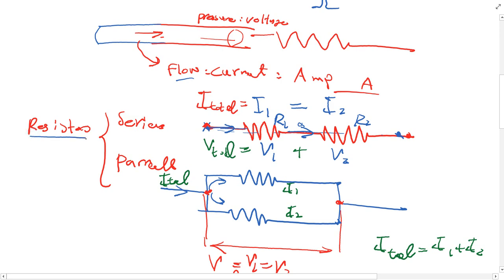Let's consider two scenarios: one where resistors are in series, and the other where resistors are in parallel. Series means when two resistors come after each other — if electricity wants to go, it has to go through both of them. For example, if you want to go from Detroit to Ann Arbor, you have to go through one city and then the next. These two are in series — you go from one and then you go to the next.